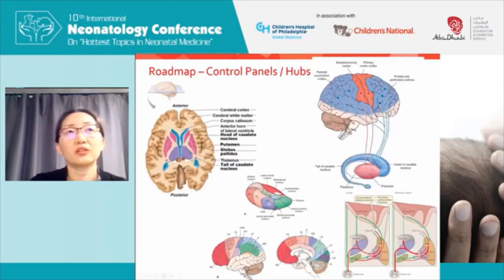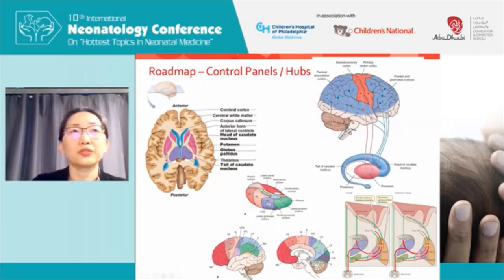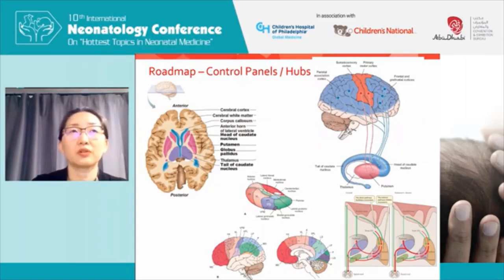I use the analogy of describing the subcortical gray matter as control panels or hubs. You have the control panel for motor function in your basal ganglia, and therefore having significant injury to your basal ganglia — as can happen with hypoxic ischemic insults — means you can confidently tell the family that their child will have cerebral palsy because they will have motor manifestations. If it's of a moderate to severe level, it should persist beyond a year of life and therefore be a lifelong issue.